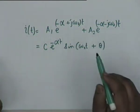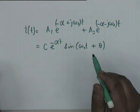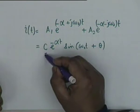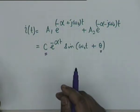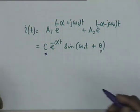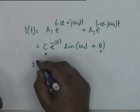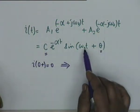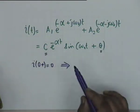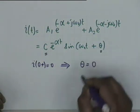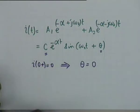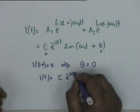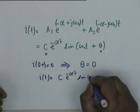For D less than 0, S1,2 can be written as minus alpha plus or minus j·omega0, where alpha equals R/2L and omega0² equals 1/LC minus (R/2L)² equals omegan² minus alpha². Under this condition, the current solution takes the form A1·e^((−alpha+j·omega0)t) plus A2·e^((−alpha−j·omega0)t), which can be written as C·e^(−alpha·t)·sin(omega0·t plus theta). Applying I(0 plus) equal to 0 gives theta equal to 0, so I(t) equals C1·e^(−alpha·t)·sin(omega0·t).